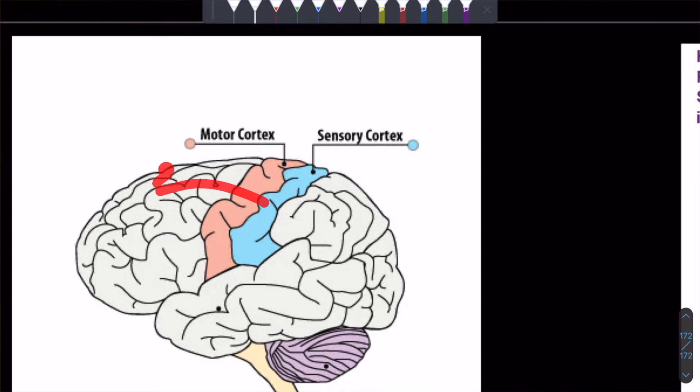The front half, the frontal lobe portion, is the motor cortex, the primary motor cortex. The back half is the somatosensory cortex.